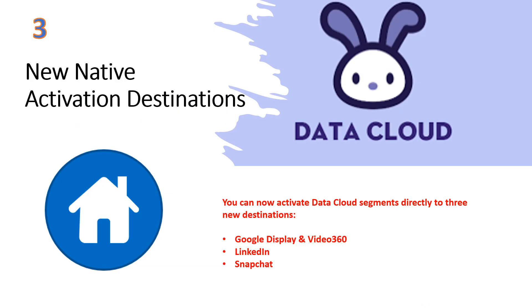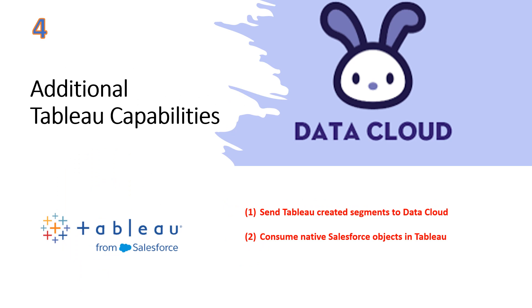Once you've created your segments, you can send them to a wide variety of activation destinations. New in the Spring 24 release is the ability to activate segments directly to Google Display and Video 360, LinkedIn, and Snapchat. And now you can send to Data Cloud your segments created in Tableau. Within Tableau Cloud and Tableau Desktop, it's now possible to view the underlying data lake objects, data model objects, and calculated insights.